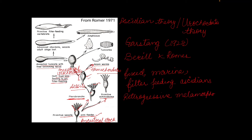After attaching to a substrate, the larva undergoes retrogressive metamorphosis. Retrogressive metamorphosis is the type of metamorphosis in which the larva is more advanced than the adult. As in the case of urochordates, the larva is free-swimming but the adult is fixed. Some larvae underwent retrogressive metamorphosis and gave rise to inactive or fixed adult forms, known as tunicates or modern urochordates.